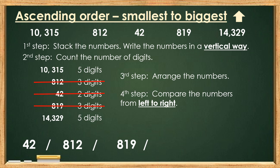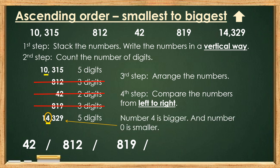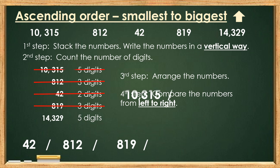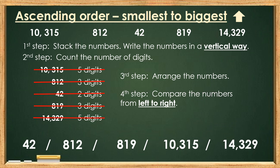We can see that we also have 2 numbers with 5 digits, so again let's compare them from left to right. 1 and 1 are the same, so let's move on to the next number. 0 and 4 are not the same — number 4 is bigger and 0 is smaller. So it means 10,315 is next and the biggest number is 14,329.